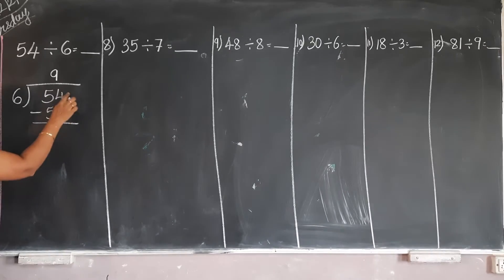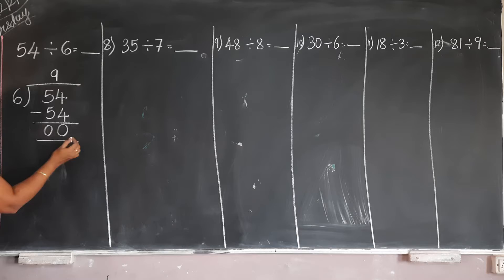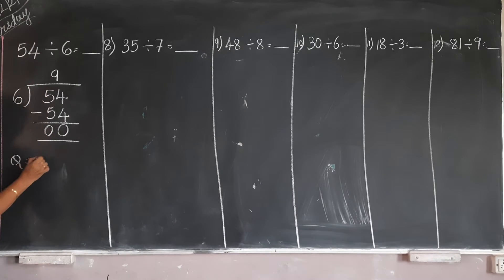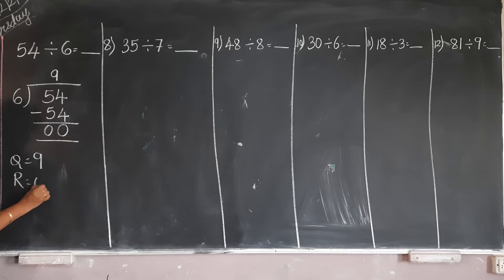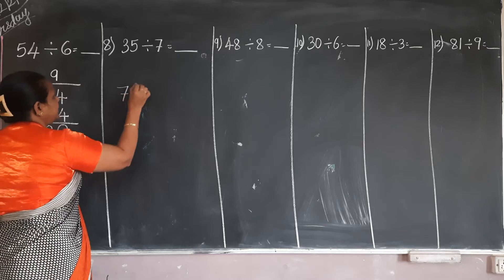4 minus 4, 0. 5 minus 5, 0. So your question is, question means, this is your answer 9 and the remainder is 0. Again, see how I will explain you again.